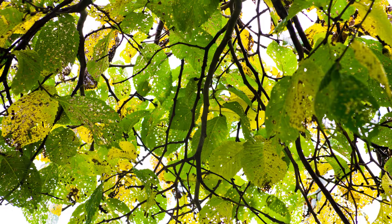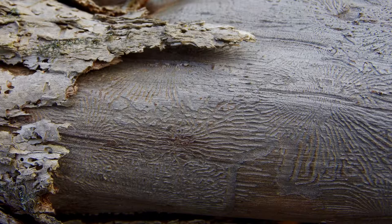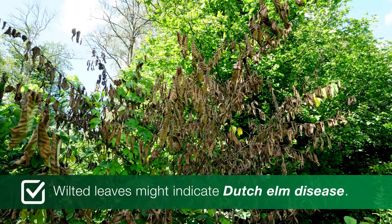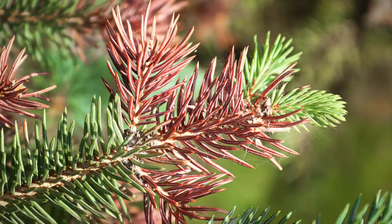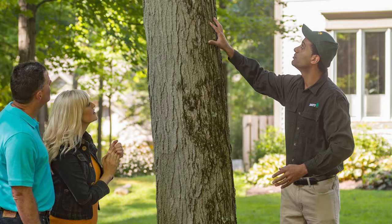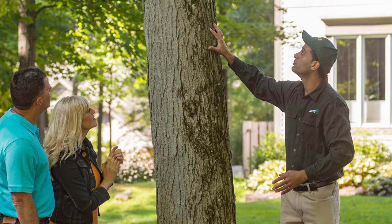Some specific examples of tree diseases in our area are Dutch elm disease and needle cast. Wilted leaves might indicate Dutch elm disease, and brown needles that are prematurely dropping might signal needle cast. Because many diseases share common symptoms, it's important to talk to a professional arborist for proper identification and treatment recommendations. There are many things you can do to keep your trees healthy so they can better withstand pest and disease attacks, such as proper watering, fertilization, and pruning practices.